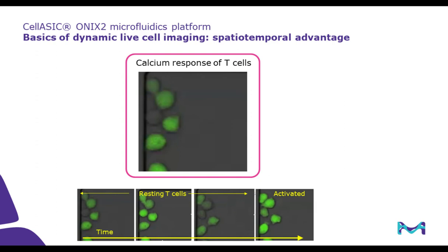In this particular experiment, calcium indicator loaded T cells were kept without disturbance — indicated as resting T cells — and then activated with ionomycin, which causes an increase in intracellular calcium level, a very important and key step in the activation of T cells. While these are snapshots taken from actual time-lapse images, already a couple of observations can be made: we start to notice that the T cells are actually oscillating in their calcium level even during the resting stage, and also that there is a significant level of heterogeneity among the T cells in terms of their calcium responses.